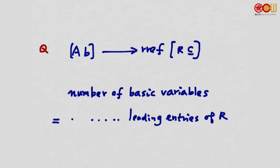Now, some questions. Consider the augmented matrix AB with reduced row echelon form REFC. Is the number of basic variables the same as the number of leading entries of R? Yes, indeed — because each basic variable corresponds to a leading entry. So the number of basic variables equals the number of leading entries.